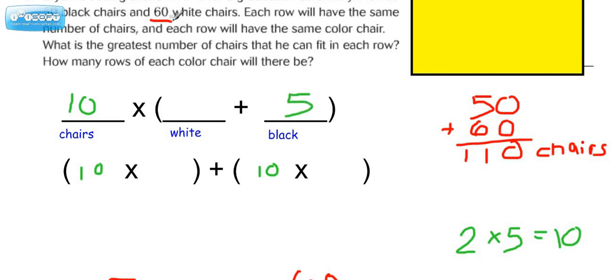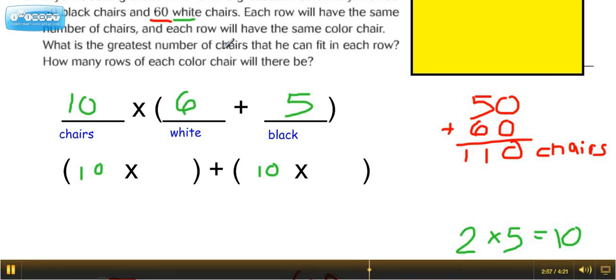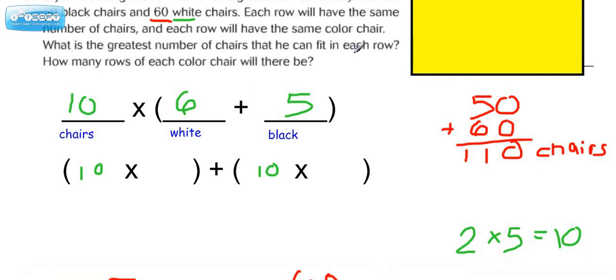Now let's think of the same thing for the white chairs. 10 times what is 60, and of course the answer there would be 6. So now let's think about what they're asking us here. They're asking us what is the greatest number of chairs that he can fit in each row. Is this the value that they're looking for there?